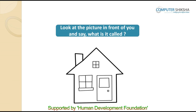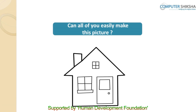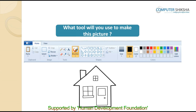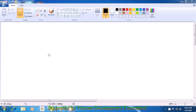Look at the picture in front of you — this is a picture of a simple house. Can all of you easily make this picture? What tool will you use? You will use the line tool to make this picture. Let us now learn to make this picture by watching the video. While drawing, if you have any questions, you may ask your teacher. To make this home, you need to select the line tool — take your pointer into the toolbox and left-click on the line tool.